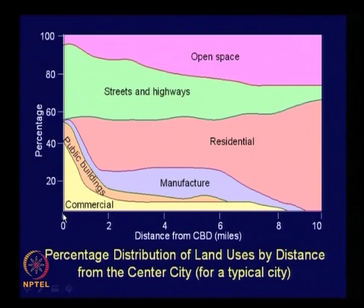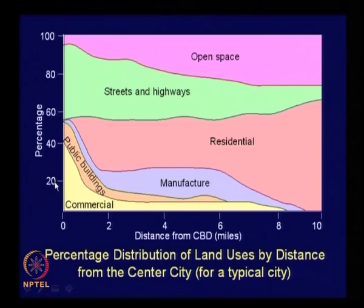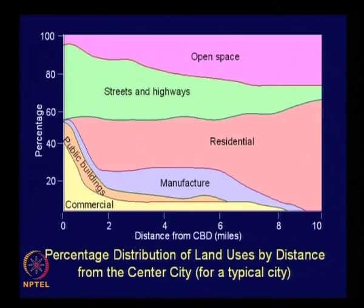This is the percentage proportion of different types of land uses with respect to distance from CBD. At CBD proper, you can see a very high percentage of commercial land use — nearly 40 percent of the land space available is only for commercial activity. And quite a few public buildings, amounting to about 15 percent of the total space. Manufacturing will be negligible in the CBD area. Streets and highways form the chunk of the land use, because once the land use is very intensive you need to have access — you will have lot of streets, lanes and by-lanes to access each building in the heavily built-up area. Open space is going to be relatively less.